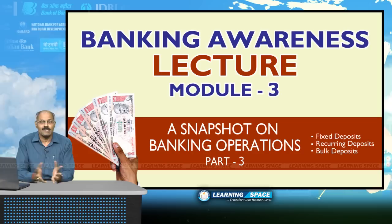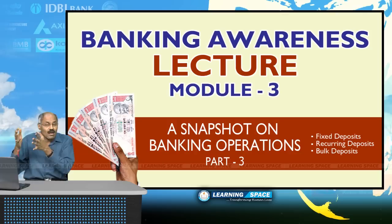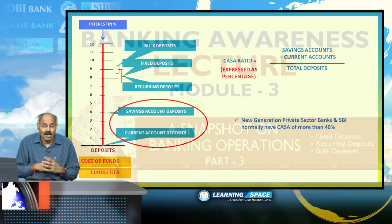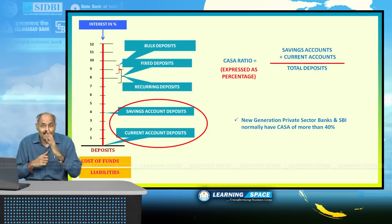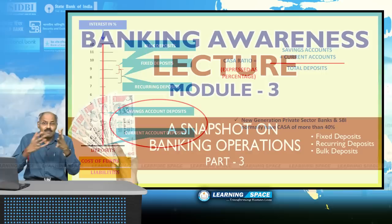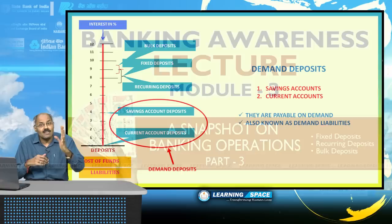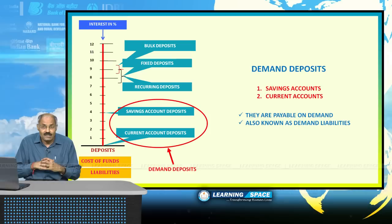Welcome back to the third module of banking awareness, a snapshot on banking operations. We are discussing various aspects of banking. So far we have discussed cost of funds, yield, net interest margin, and various types of accounts including savings bank accounts, current accounts, and CASA ratio. CASA ratio is the ratio of current account and savings account to total deposits. Current accounts and savings accounts together are known as demand deposits.